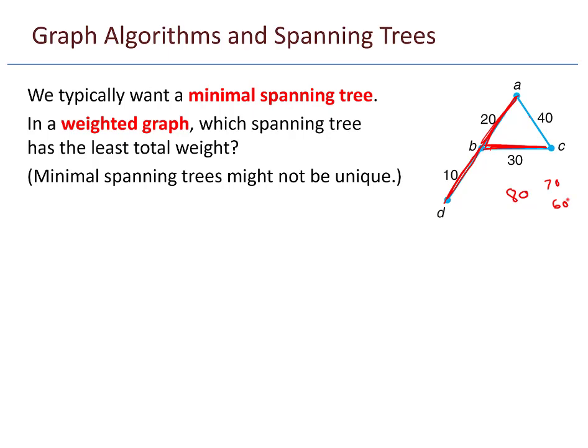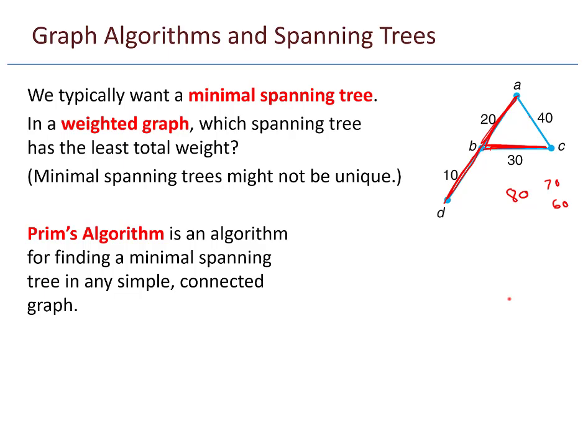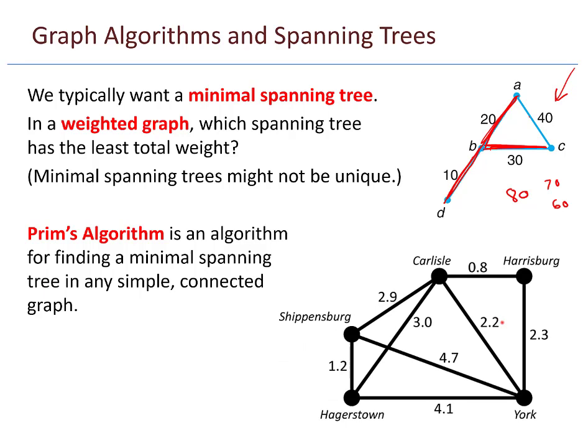Minimal spanning trees might not be unique — you might have several minimal spanning trees. If some of these weights are the same, that could certainly cause different minimal spanning trees to exist. Prim's algorithm is an algorithm for finding a minimal spanning tree in any simple connected graph. For larger graphs, it's nice to have a step-by-step method that guarantees the production of a minimal spanning tree.